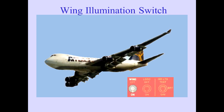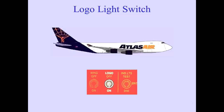The wing illumination switch controls flush-mounted lights on each side of the fuselage. These lights illuminate the wings and engine nacelles. The logo light switch controls two spotlights installed on the horizontal stabilizers which illuminate the vertical stabilizer.